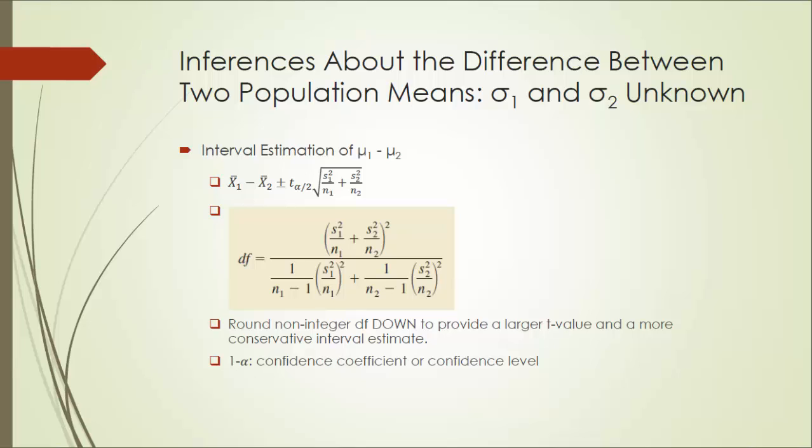In the previous video, we talked about statistical inference about the difference between two population means when sigma1 and sigma2 are known. As you can imagine here, we're going to deal with the situation in which two population standard deviations are unknown.